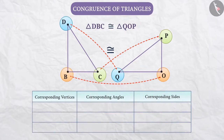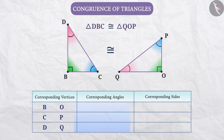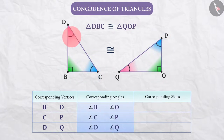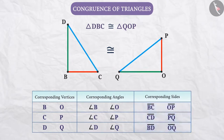Looking at these correspondences, we can tell that here are the pairs of corresponding vertices: vertex B and vertex O, vertex C and vertex P, and vertex D and vertex Q. Pairs of corresponding angles are angle B and angle O, angle C and angle P, and angle D and angle Q. Similarly, there are pairs of corresponding sides: BC and OP, CD and PQ, and BD and OQ.